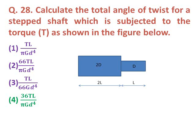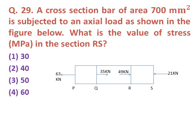Question twenty-nine: A cross-section bar of area 700 mm² is subjected to an axial load as shown in the figure. What is the value of stress in MPa in section RS? Using the axial load principle, the correct answer is 30 MPa.